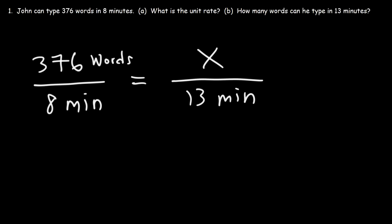Whenever you have this situation, the best thing to do is to cross multiply. So we're going to multiply 8 times x, which will give us 8x. And then 376 times 13. 376 times 13 is 4,888.